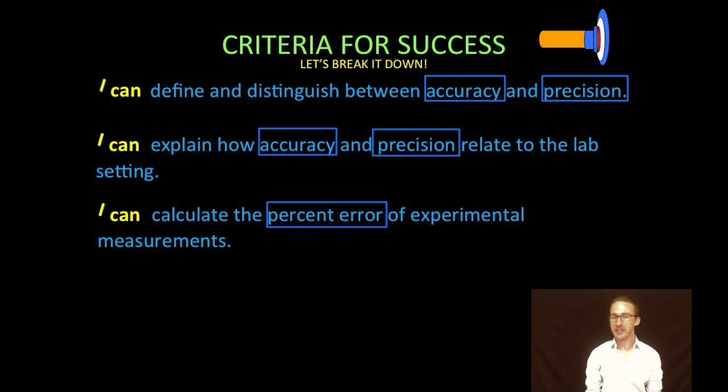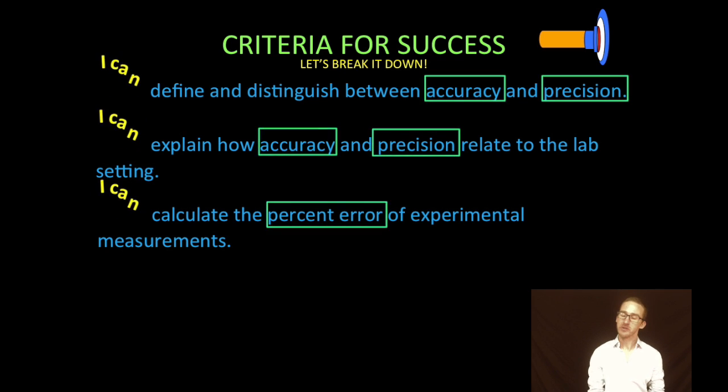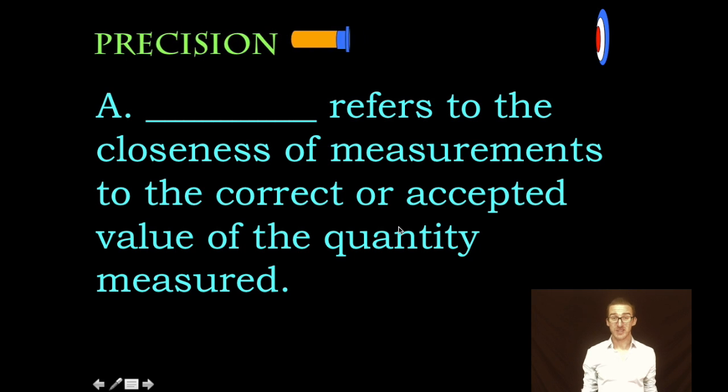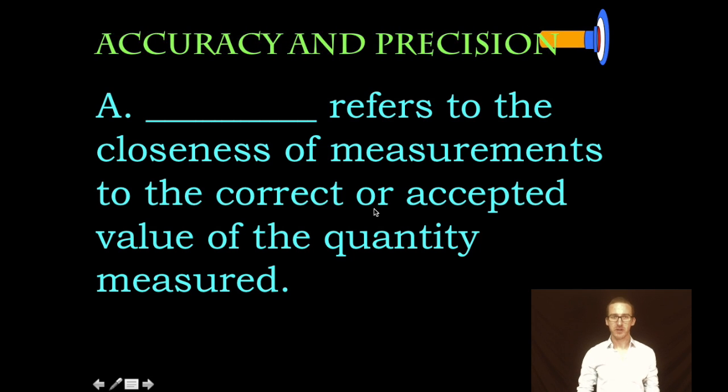Two, we are then going to explain how accuracy and precision relate to the lab setting. We're doing lots of labs and it's gonna be really important that you use those two terms correctly. And then lastly, numero three, we're gonna calculate what is called the percent error of experimental measurements. Okay, so let's define some things. Accuracy refers to the closeness of measurements to the correct or accepted value of the quantity measured.